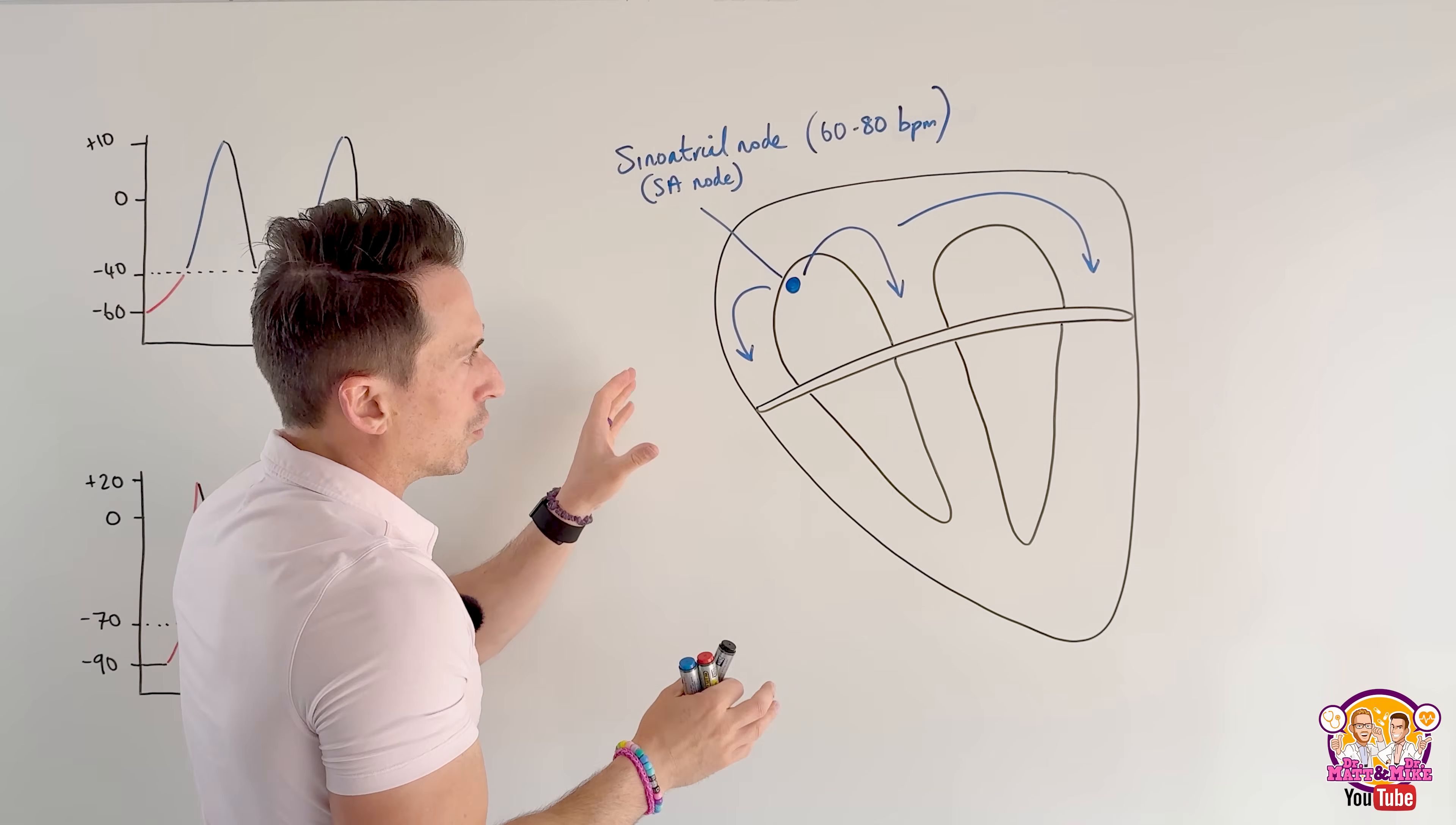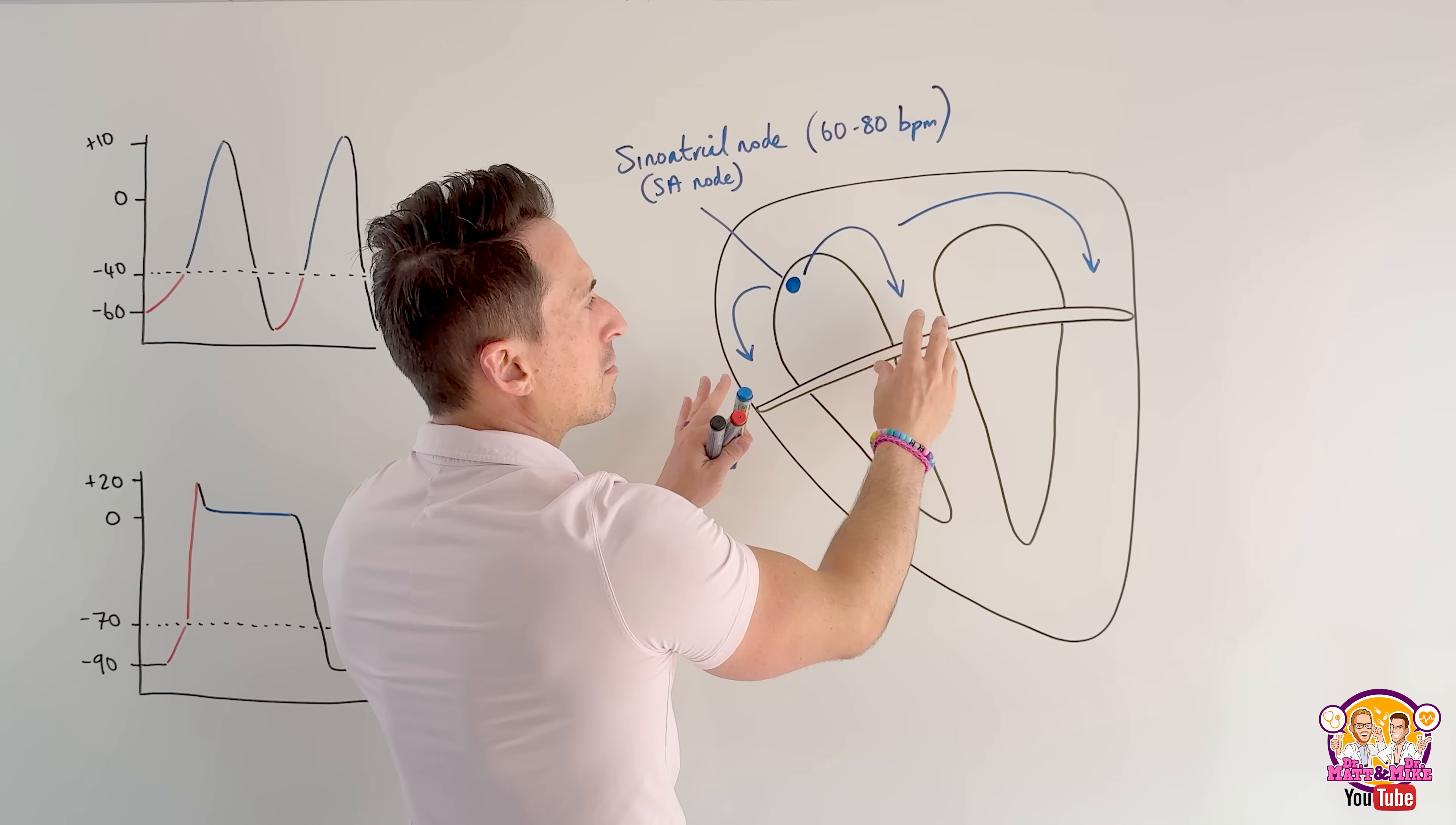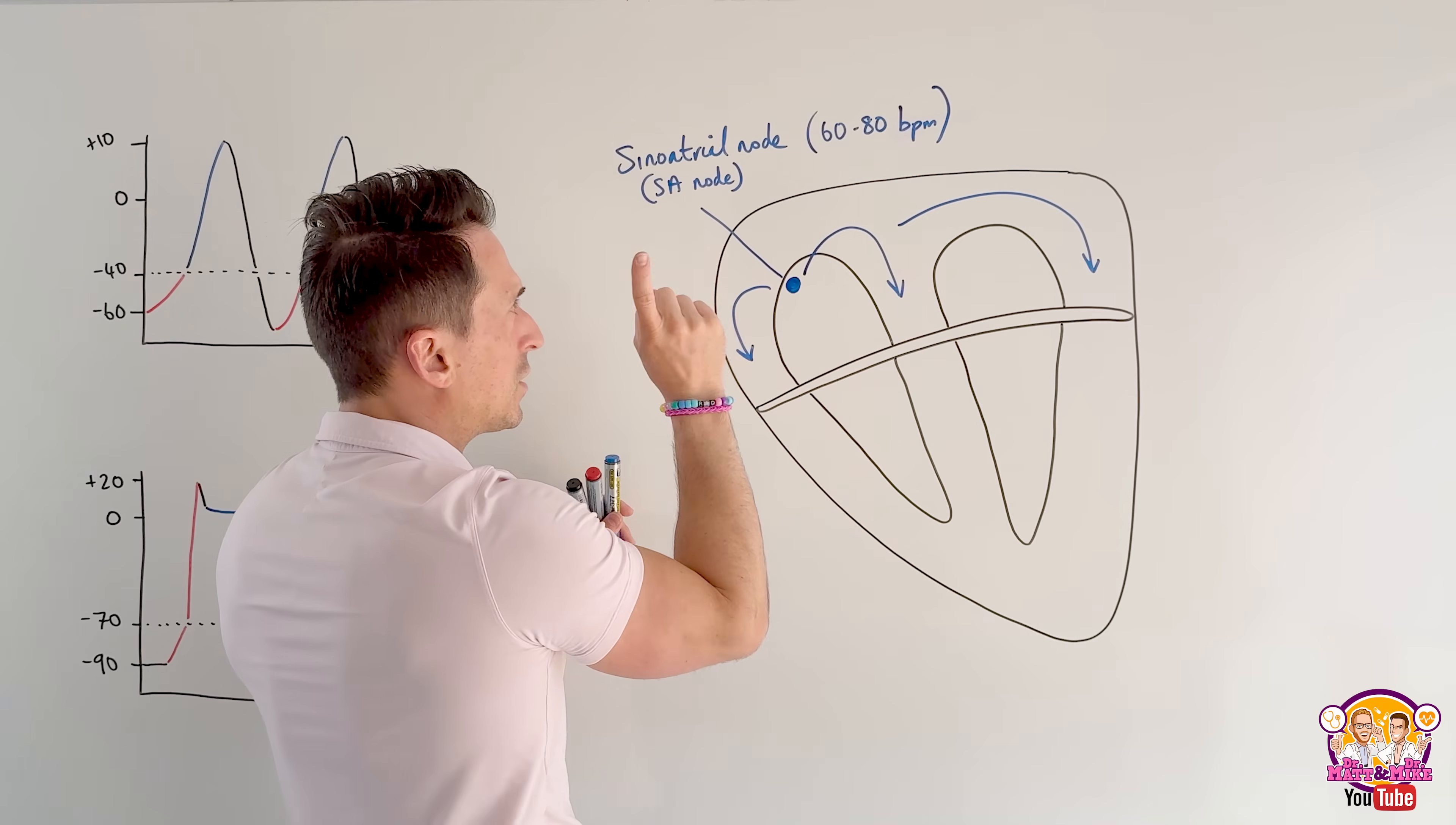So this electrical signal that's firing off will be spread to the muscles. So this is the muscle. Here's the atria. Here's the muscles. It gets spread to the muscles and tells the muscles to then contract, squeezing the atria, allowing the blood to move down from the atria to the ventricles. I haven't drawn up the valves here because this is just about conduction. So that's the first thing.